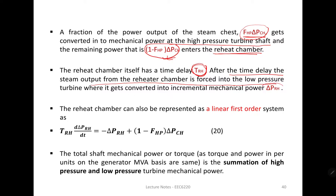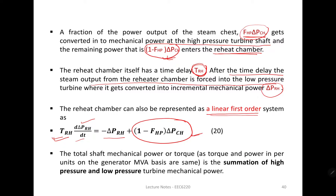After the time delay TRH, the steam output from the reheater chamber is forced into the low pressure turbine and that power is converted into incremental mechanical power delta PRH. The reheat chamber can also be represented as a linear first-order equation with time constant TRH: TRH times d(delta PRH)/dt plus delta PRH equals the remaining power being converted after reheating through the low pressure turbine.